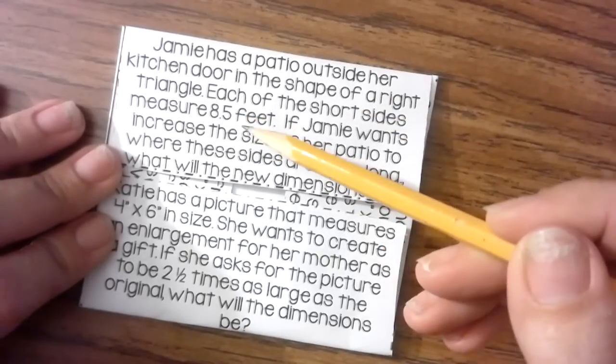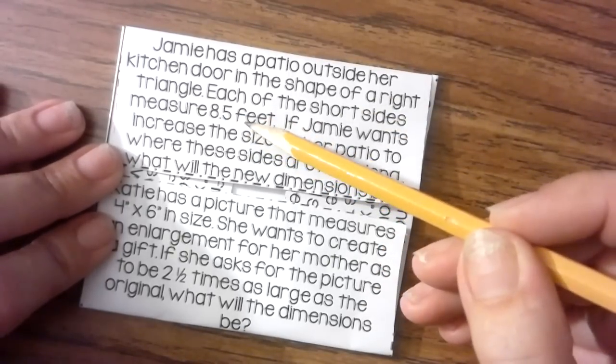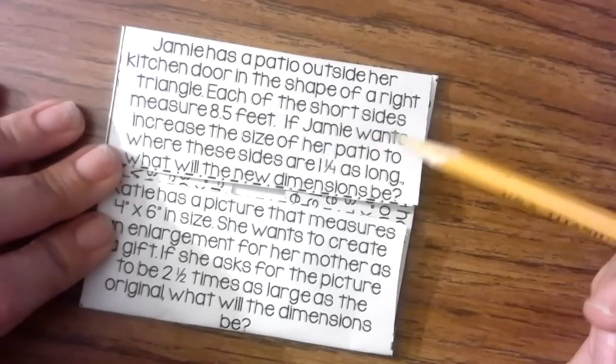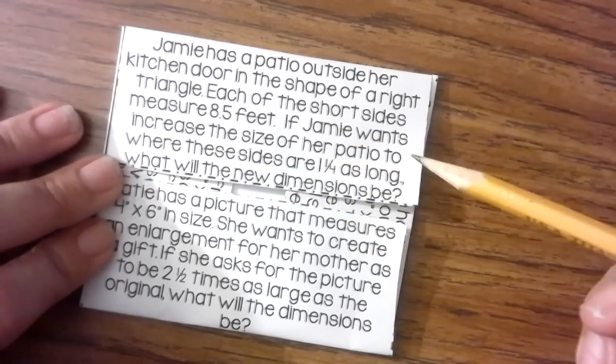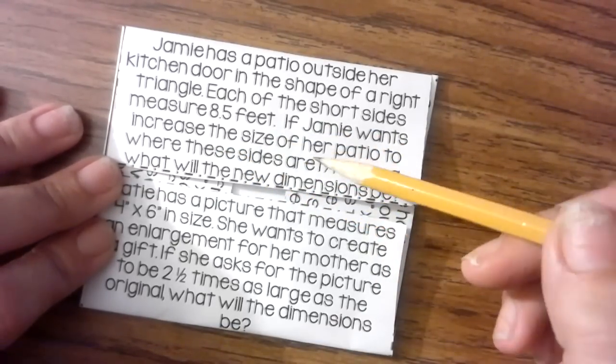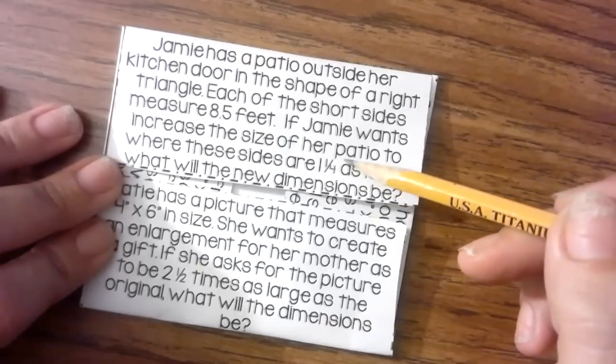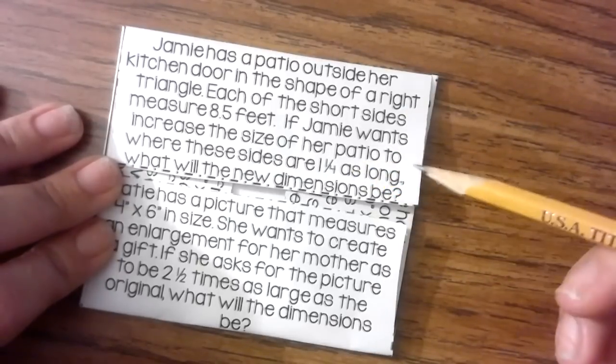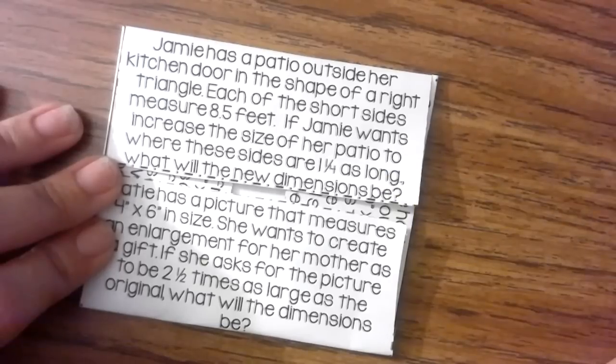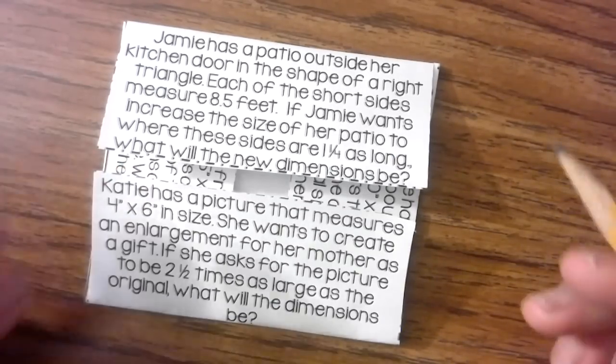Each of the short sides measure 8.5 feet. If Jamie wants to increase the size of her patio to where these sides are 1 and 1/4 times as long, what will the new dimensions be?